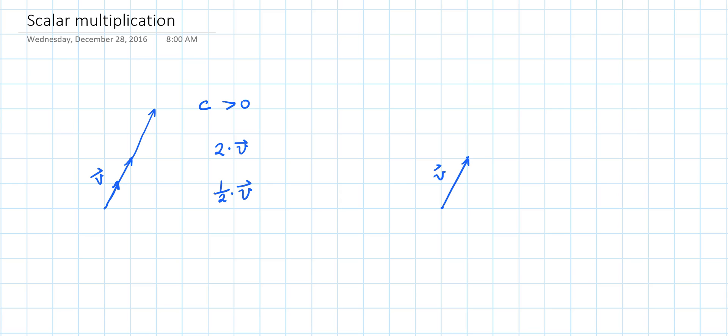Multiplying vector V by a negative scalar means multiplying the length by the absolute value of C and reversing the direction.